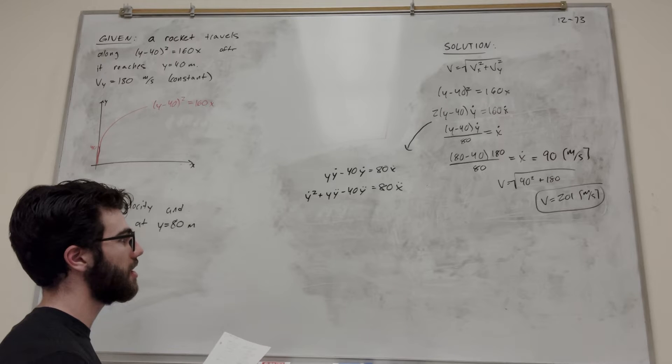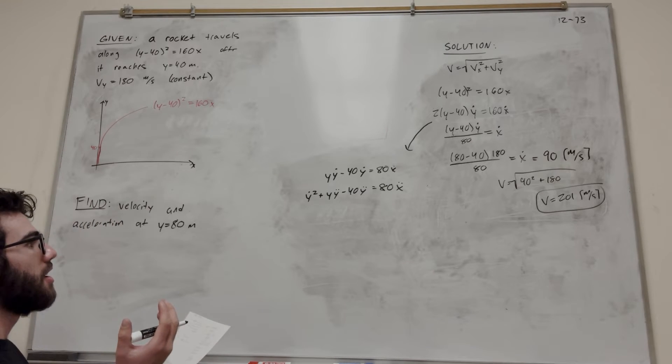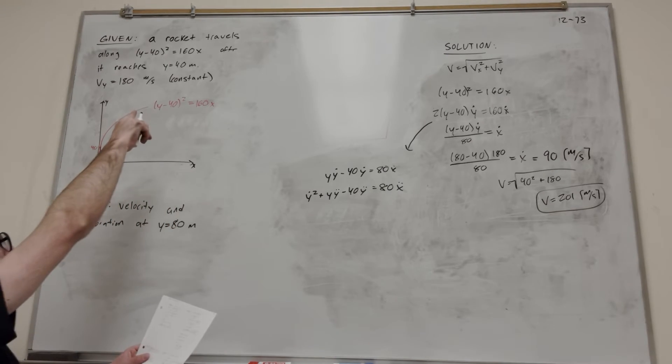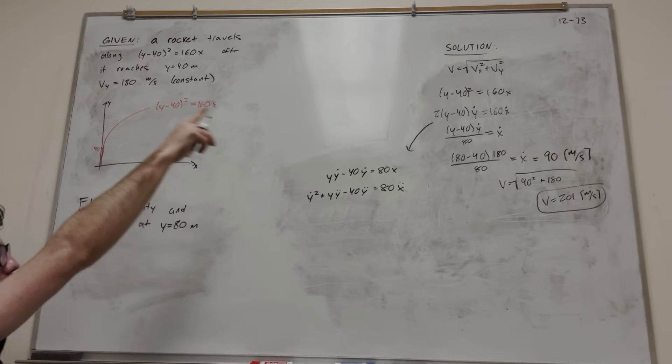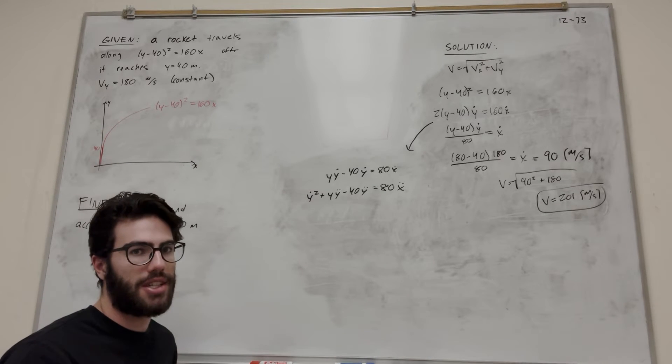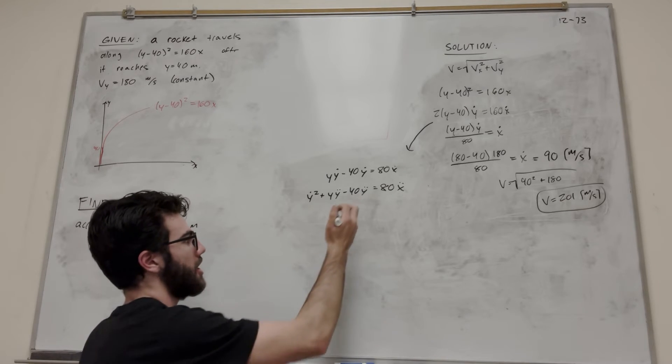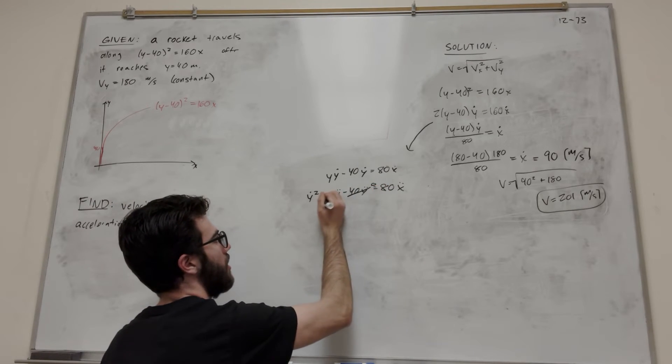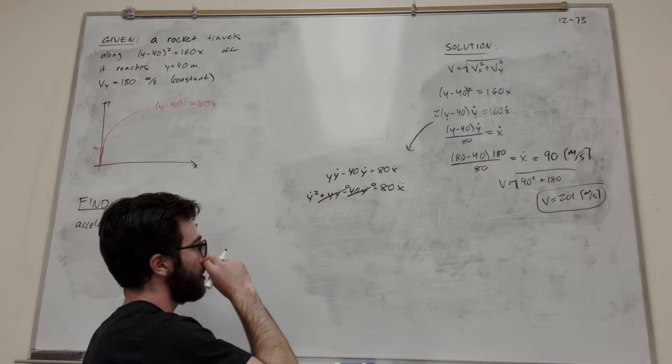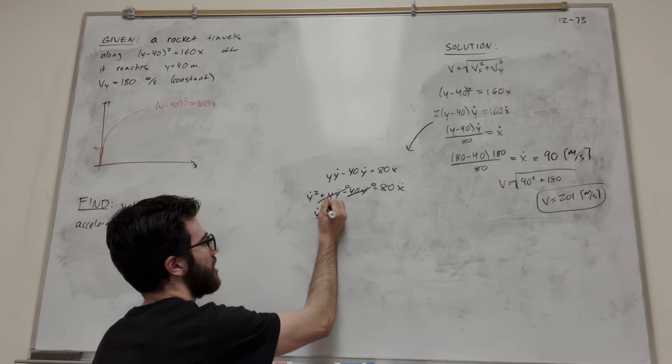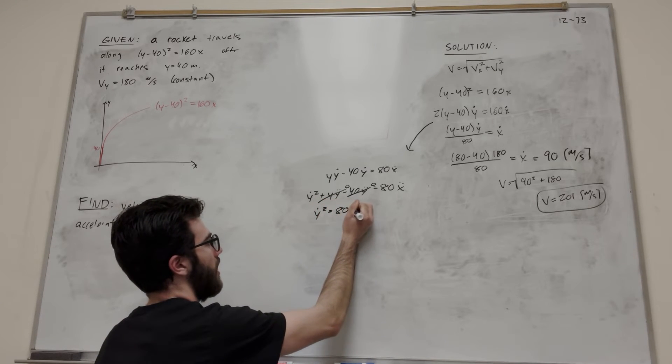Let's cancel a lot of the things that don't belong. We're traveling at a constant velocity in the y direction, so there's no acceleration in the y direction. y double dot is the acceleration in the y direction, so this can be zero, and this is zero. This simplifies our equation to y dot squared equals 80 x double dot.